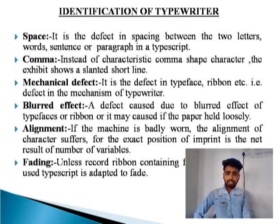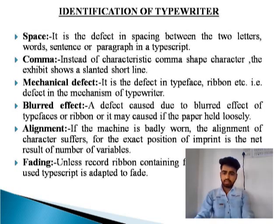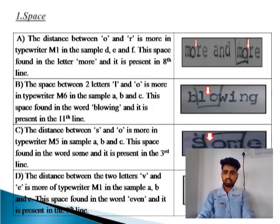Alignment: If a machine is badly worn, the alignment of characters suffers from the exact position of the imprint as a net result of a number of variables. Fading: Unless record-driven containing pre-carbon has been used, the typescript is adapted to fade.